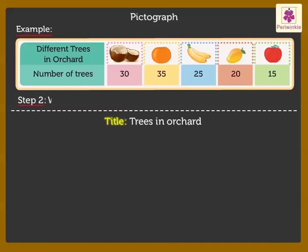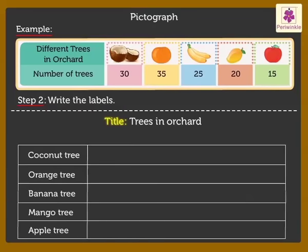Step 2: Write the labels. The labels give us the information about the different trees in the orchard.